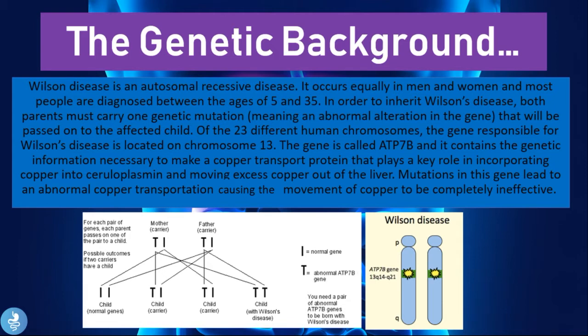Mutations in the ATP7B gene lead to abnormal copper transport, making the movement of copper completely ineffective. Wilson's disease is autosomal recessive, meaning someone can be a carrier without being affected. The affected individual needs two broken or mutated genes. The specific chromosomal location is 13q14-q21. To have Wilson's disease, a child must inherit one broken gene from each parent.